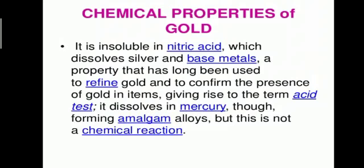Chemical properties of gold: Gold is insoluble in nitric acid, which dissolves silver and base metals — a property that has long been used to refine gold and to confirm the presence of gold in items, giving rise to the term 'acid test.' Gold dissolves in mercury, forming amalgam alloys, but this is not a chemical reaction.